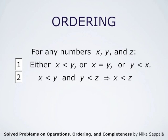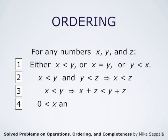Thirdly, if x is less than y, then x plus z is less than y plus z for all z. And lastly, if x is greater than zero and y is greater than zero, then x times y is also greater than zero. These are the defining properties of these operations.